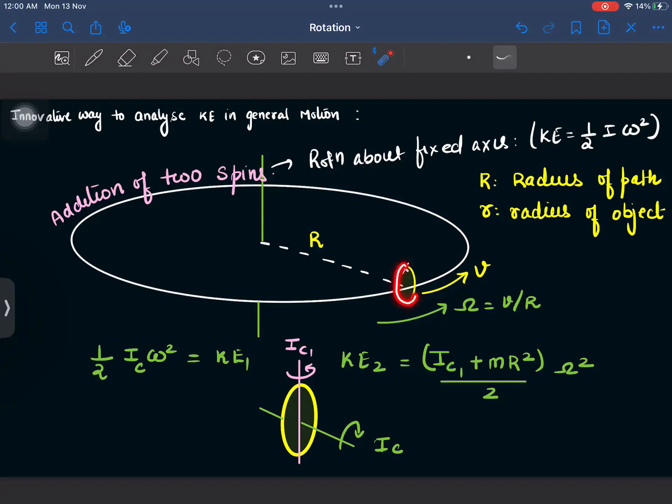Now in such a case, I can consider that this particular body is rotating about this axis. And if I consider the moment of inertia of this body to be IC1, then the moment of inertia about this from the parallel axis theorem will be IC1 plus MR square. Now what is half I omega square? This is the kinetic energy due to this particular motion of this body, which is one of those spins. That is the spin about the green axis. So we can write it down, spin about green axis.